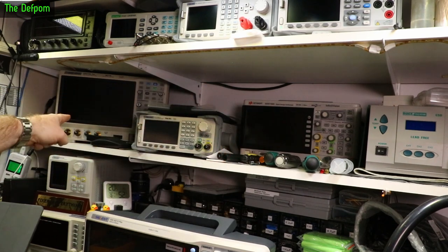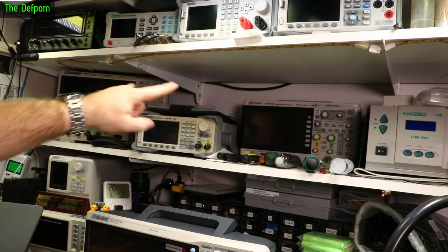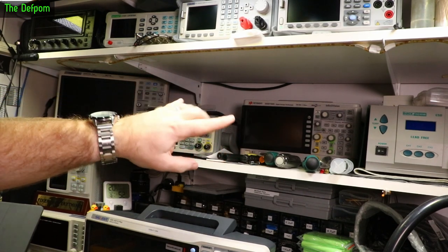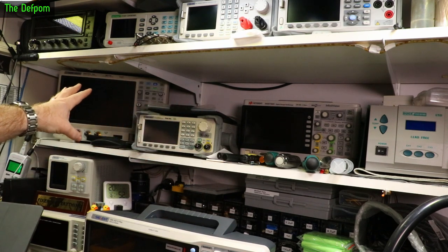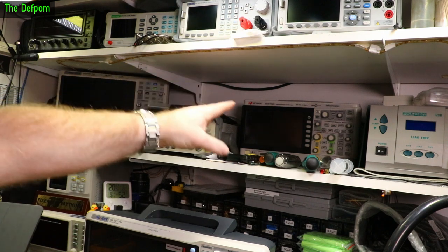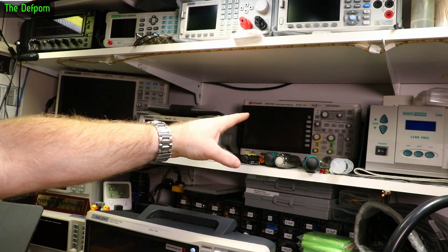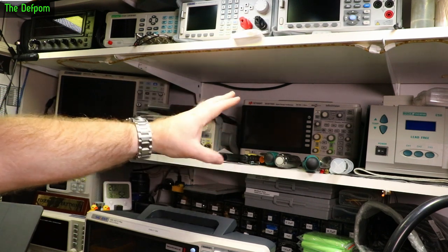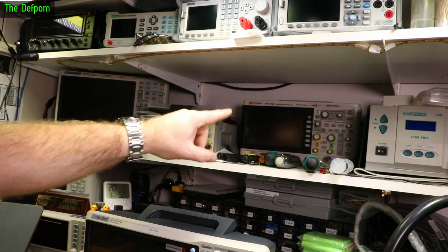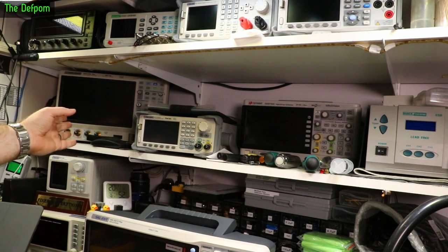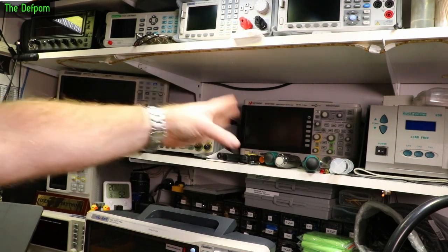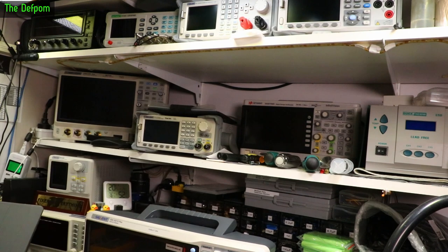And the reason I have this on here as well as the Siglent is because they do decoding a little bit differently. So serial decoding, this will give you raw hex values and raw ASCII. Whereas this will actually tell you it's a Shift key or an Escape key or something like that, or an Enter button. It will actually tell you that in the decoding. So sometimes that difference can be handy.